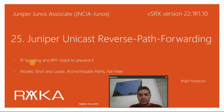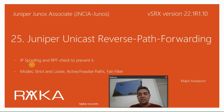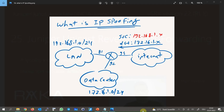In an IP spoofing attack, an intruder tries to spoof the source IP address of the traffic in a way that it seems the traffic comes from a legitimate source, to bypass the firewall and security solutions. It is usually used in denial-of-service attacks. To better understand how Unicast Reverse Path Forwarding works, let's first check what IP spoofing is.